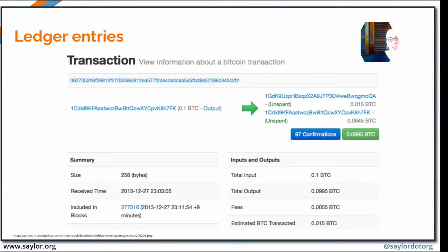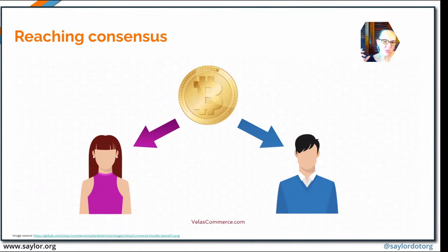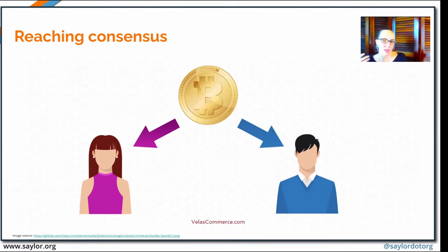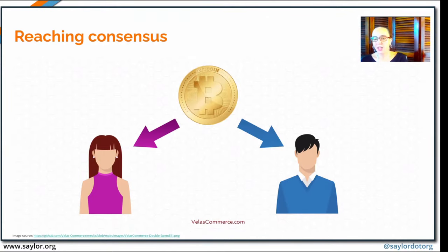Now let's roll right along into consensus. All of the components of Bitcoin existed prior to Bitcoin, except for this part — the consensus algorithm, the Nakamoto consensus, as we sometimes call it. This is the magic sauce of Bitcoin, what is unique to these systems that did not exist before. It is this method of reaching consensus in decentralized systems. This part is really important to wrap your head around. I'm very glad this is being recorded, because you often want to come back to these things a couple of times. For a lot of people, it takes about three passes to really grasp what's happening.